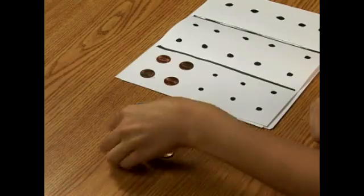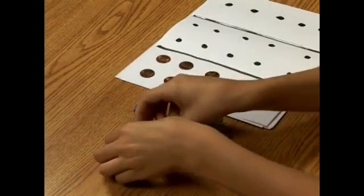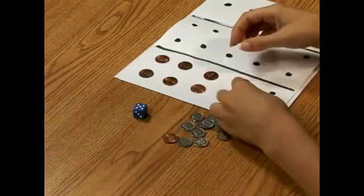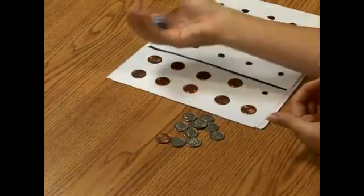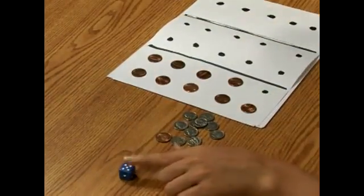I rolled a five, so I put down five pennies. It would be the next person's turn, and then my turn again. And this time I rolled a five.